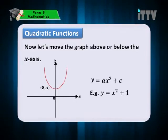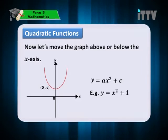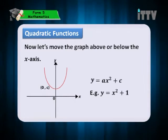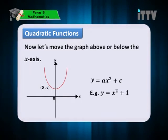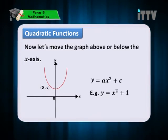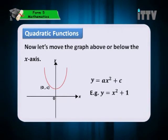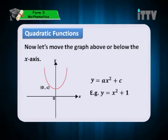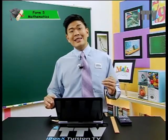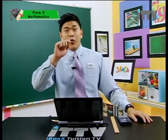What happens when we move the graph above or below the x-axis? If elevation happens and we move it above or below the x-axis, take a look at this graph — a y-intercept with coordinates of (0, c). The equation is y equals to ax-square plus c. An example would be y equals to x-square plus 1. When you have y equals to x-square plus 1, it means the graph of y equals to x-square is elevated by positive 1 unit.